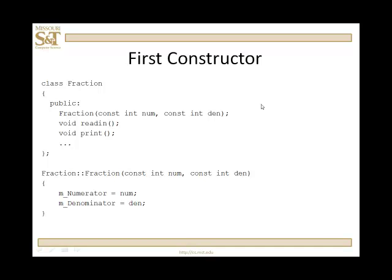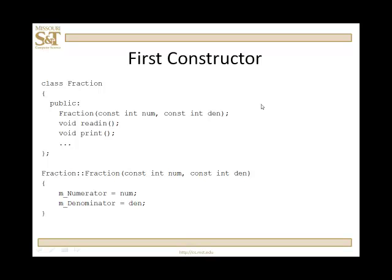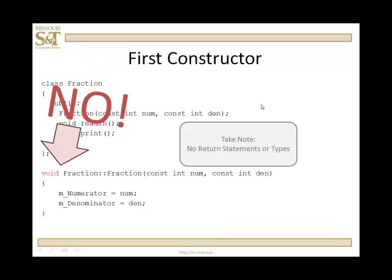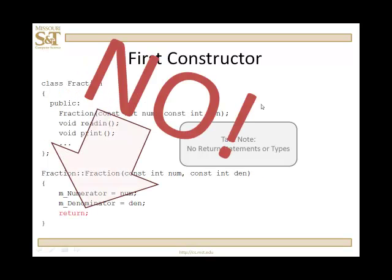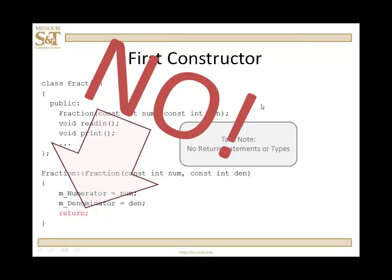Again, no return type. We scope it as a fraction function. Its name is fraction, and we're going to have it set the numerator to num, denominator to den, the two values that are sent in. Okay, once again, we don't return anything. No, there's no return type, not an int. It's not void, and we don't have any return statements.